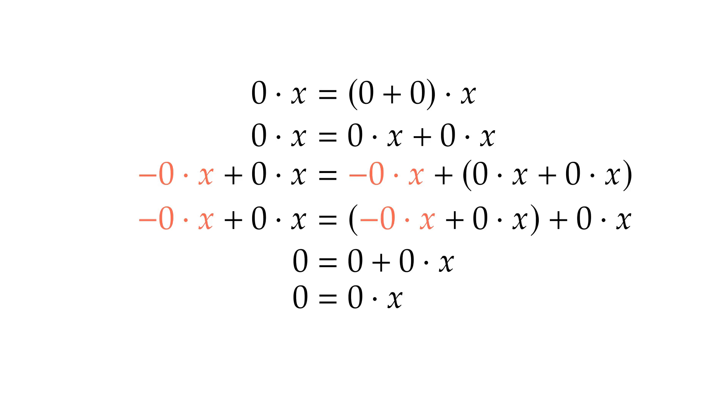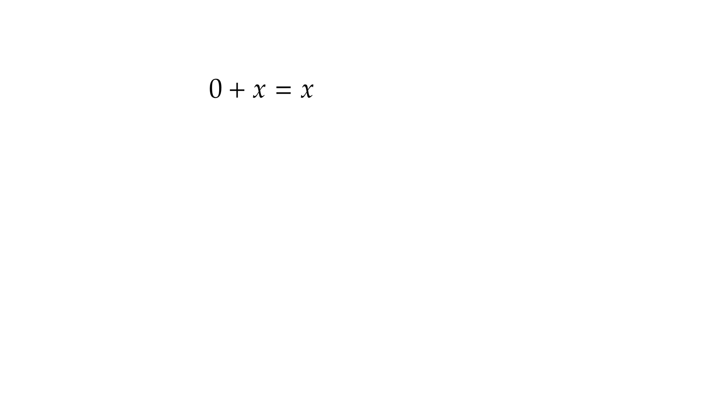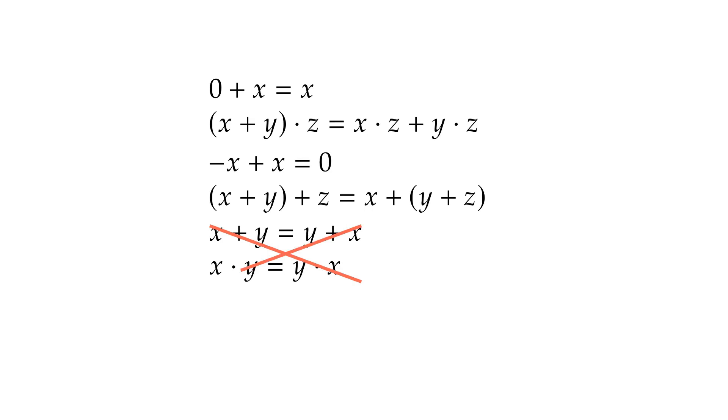In this proof, the only facts we really used are that 0 plus anything equals that thing, that addition distributes over multiplication, that every number has a negative that cancels it to give 0. And if you want to be real technical, we did also use associativity to group parens. We don't even need commutativity of addition or multiplication, which is good because matrix multiplication is not commutative.